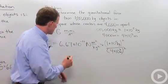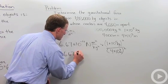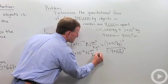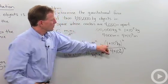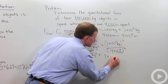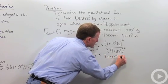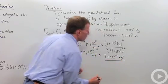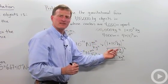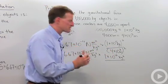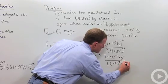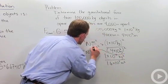Carrying this down, I have 6.67 times 10 to the negative 11 newton meters squared over kilogram squared times 1 times 10 to the 5th squared. I can add that. So that's going to equal 1 times 10 to the 10th kilograms squared over 4 times 10 to the 3rd. This is going to be 16 times 10 to the 6th. And then to keep it in scientific notation, I can say 1.6 times 10 to the 7th. And my unit there is meters squared. And separating that right there.